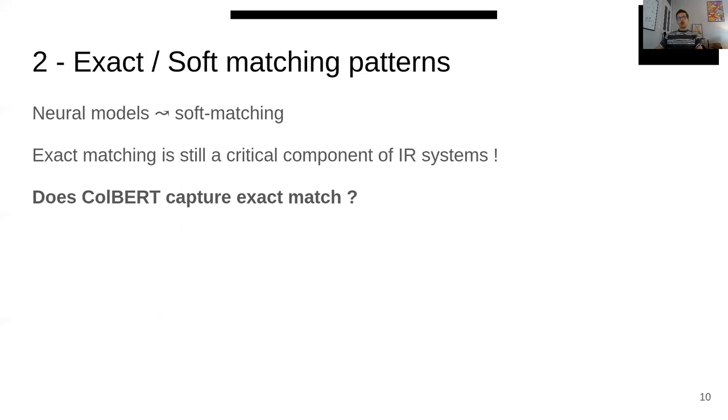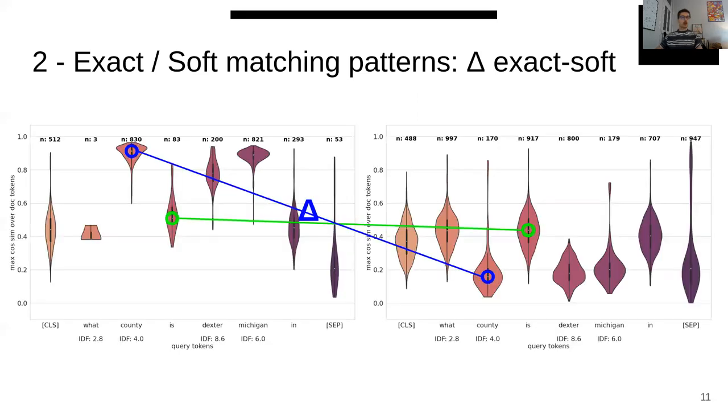Now if we turn our attention to matching patterns. One of the main advantages of neural models is their ability to incorporate soft matches. But we know that exact matching is still a critical component of IR systems. So we inspected how ColBERT deals with the two aspects. Particularly, we were interested if and how ColBERT captures exact match. Back to our example, what we want to check is for each term, the difference between average scores in the exact and soft cases. If the delta is higher, it tends to indicate that a term favors an exact match, as the model learns to widen the gap in average between exact and soft scores for this term.